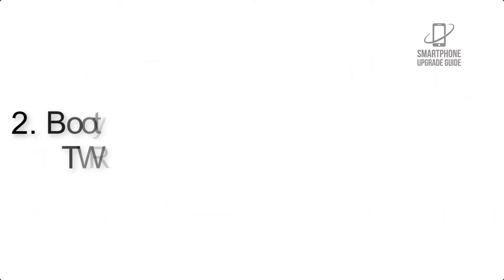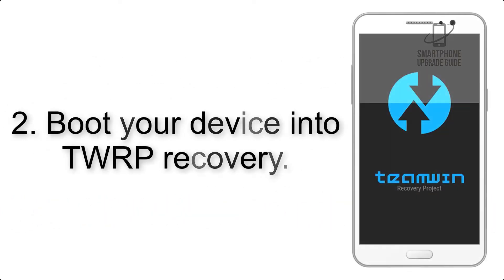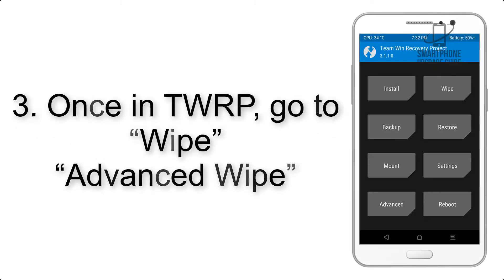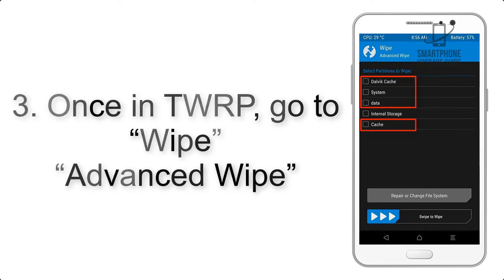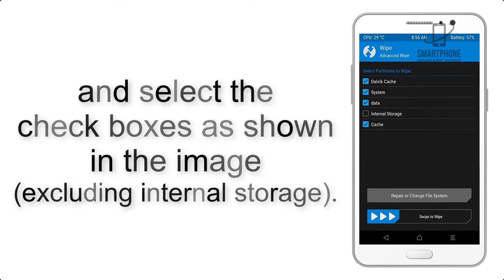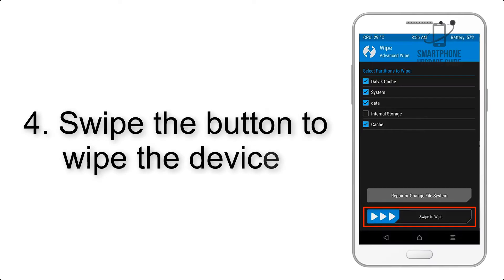Step 2: Boot your device into TWRP recovery. Once in TWRP, click on Wipe, then Advanced Wipe, and select the checkboxes as shown in the image, excluding internal storage.